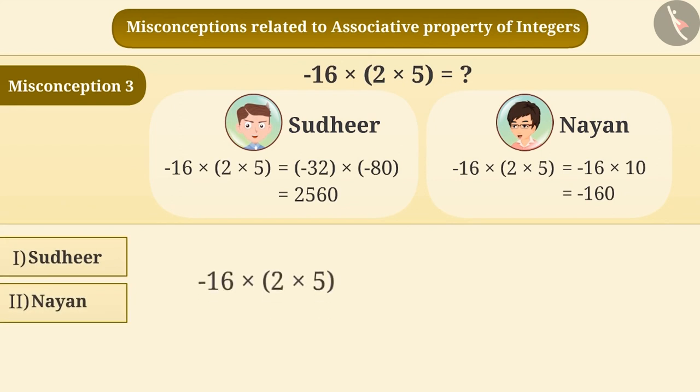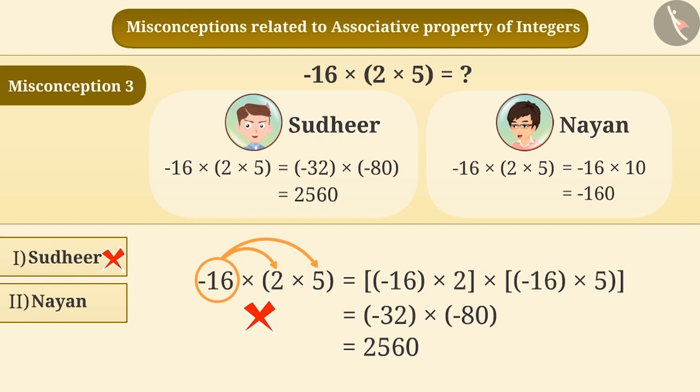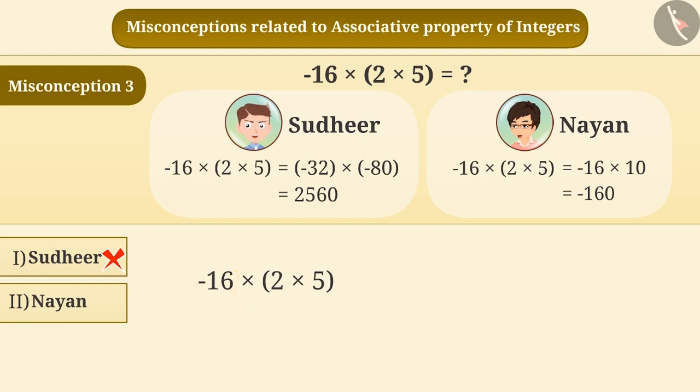Sometimes, students multiply the numbers inside the bracket with the number outside it. This is an incorrect understanding. Solving it this way, Sudhir obtained a wrong answer. The correct understanding is that, first, we will solve the expression inside the brackets and with the result obtained, we will multiply the number outside the brackets. By doing so, Nayan has obtained the correct result.